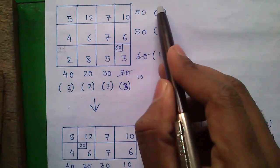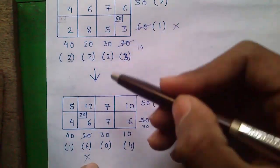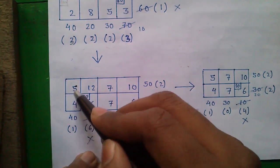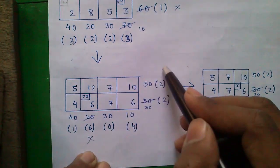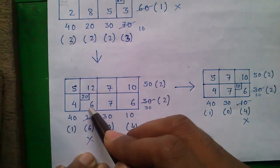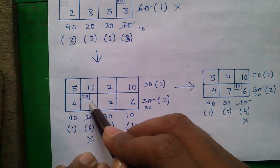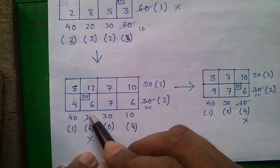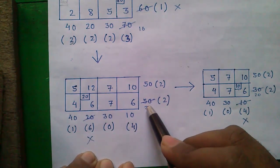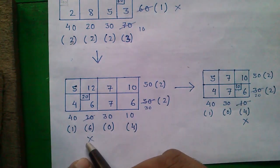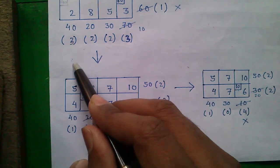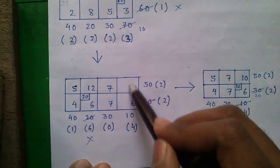In the next table, we carry only rows 1 and 2 and repeat the same process: subtract the smallest number from the second smallest number and write the penalty values. Find the largest penalty value, then find the smallest number in that row or column and allocate there. The smallest number found is 6, with demand 20 and supply 50, so we allocate 20. We now have 30 of supply left, and column 2 is exhausted, so we will not carry column 2 to the next table — only columns 1, 3, and 4 continue.